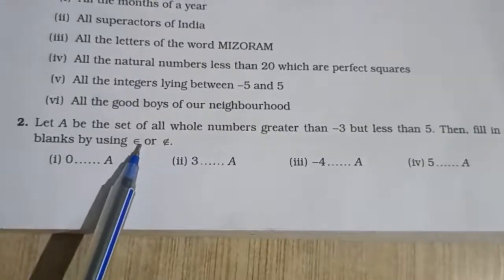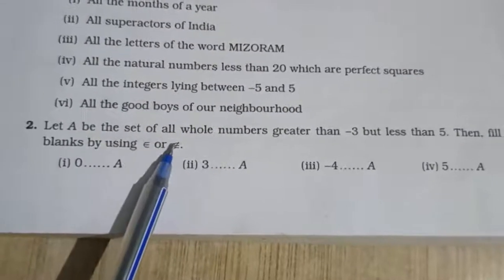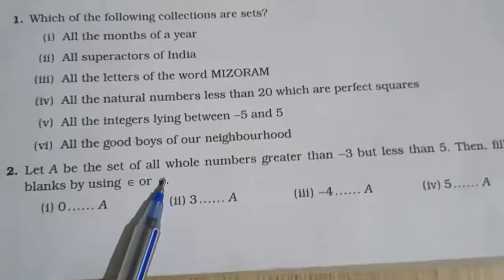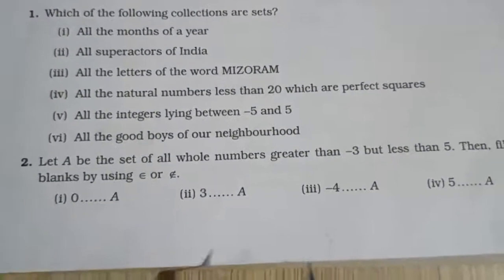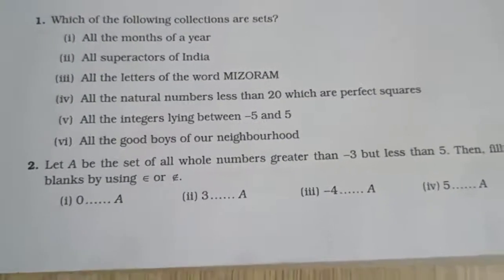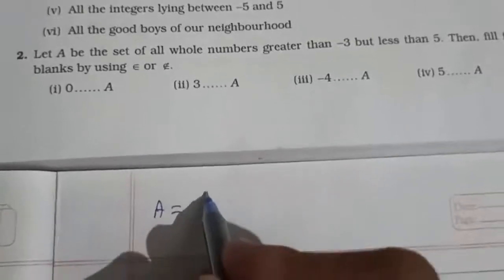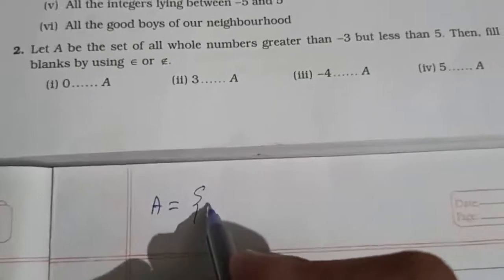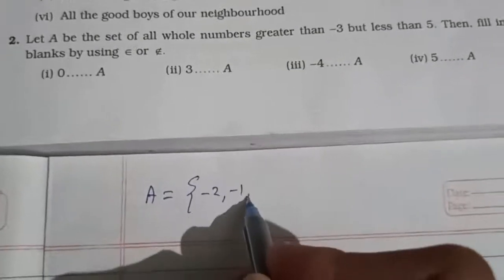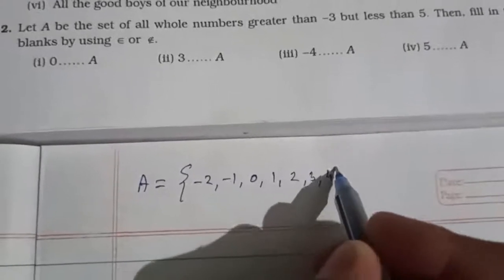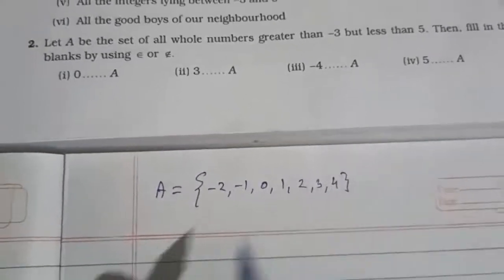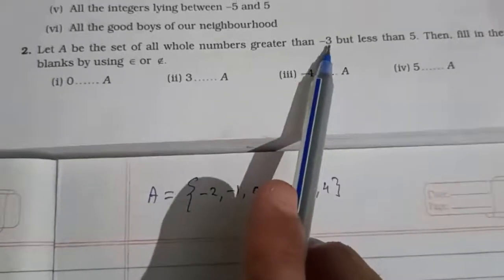They are saying to fill in using 'belongs to' (∈) or 'does not belong to' (∉). This symbol ∈ is known as 'belongs to' and this symbol ∉ is known as 'does not belong to.' Now, zero belongs to A — first write what is set A. The elements that will come in set A are: minus two, minus one, zero, one, two, three, four.